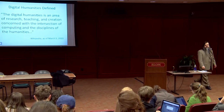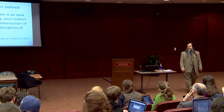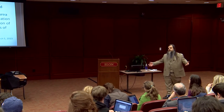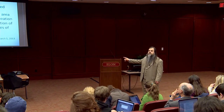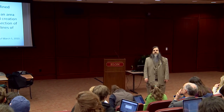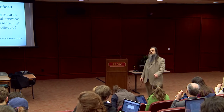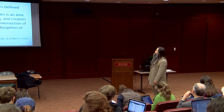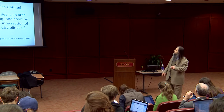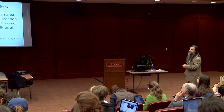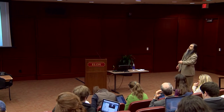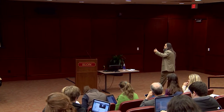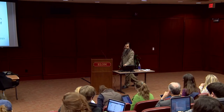Where's the best place in the world to get definitions for terms? Of course, Wikipedia. This is the current definition of digital humanities: it's an area of research, teaching, and creation concerned with the intersection of computing and the disciplines of the humanities. Not bad.